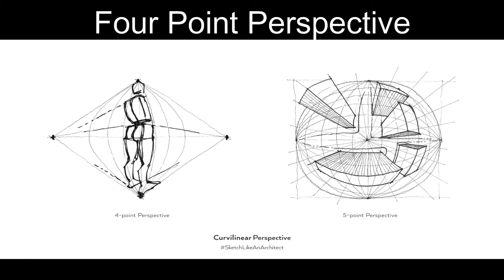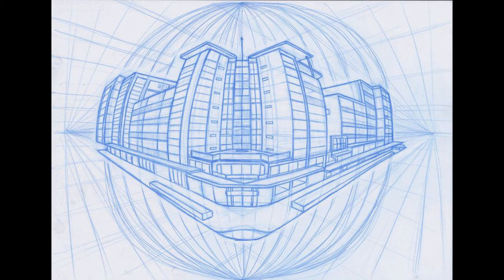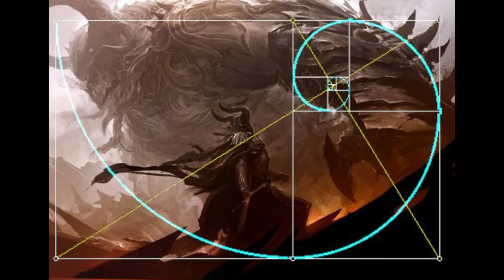Four-point perspective uses four points. If you want to create a more distorted-looking background, four-point perspective allows you to see an environment from a four-dimensional point of view. Composition is essentially the way you set up your background in a fashion that is pleasing to the eye — it's going to be important to study and practice if you want to make the best kinds of backgrounds.